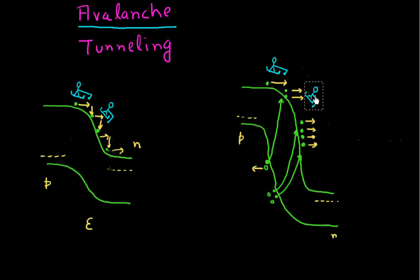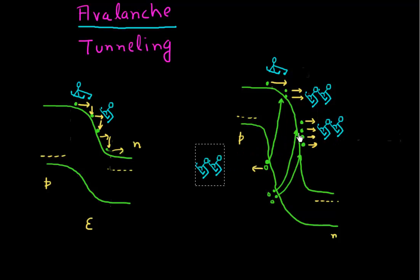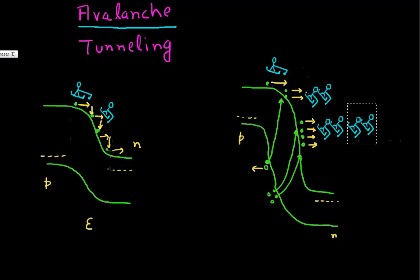What happens is they collide with another person who is also trying to ski down the hill. When they fall down, their energy is high enough that they can collide with another skier and make them fall too. Both of them are now colliding, and they generate this avalanche — a chain reaction where more and more of these skiers are falling. Eventually they have to close down the ski slope.